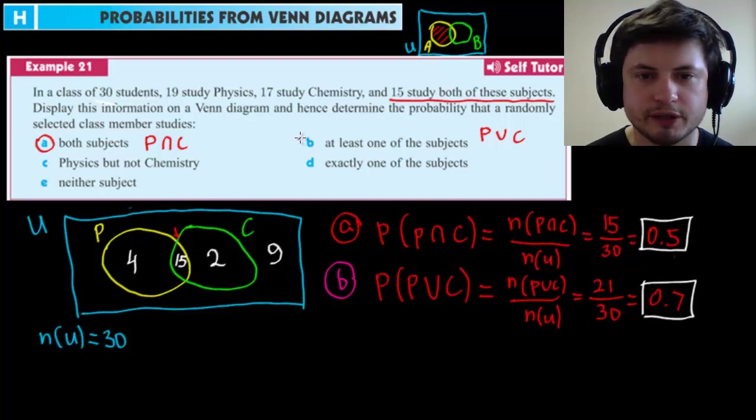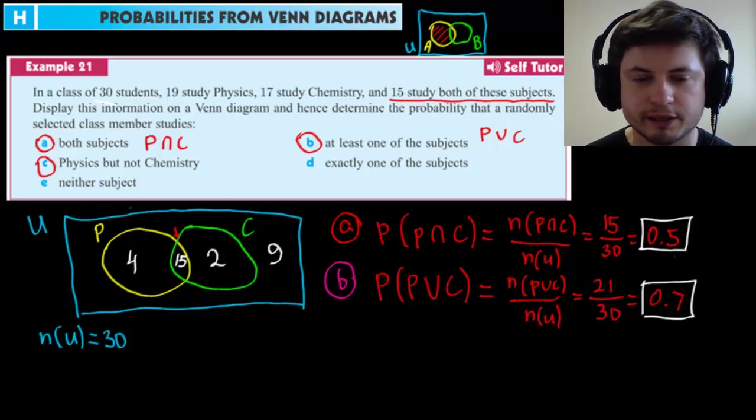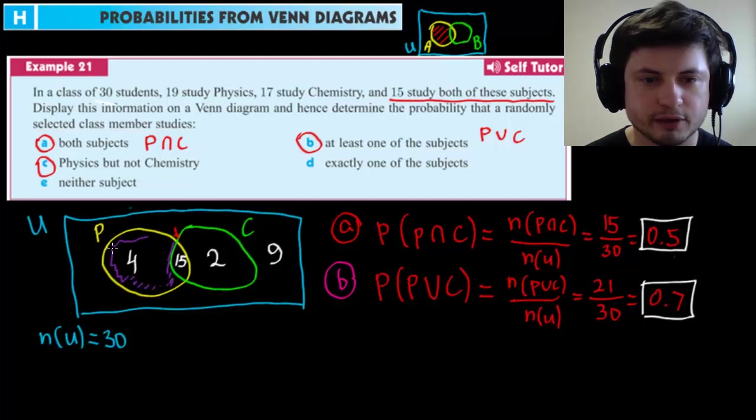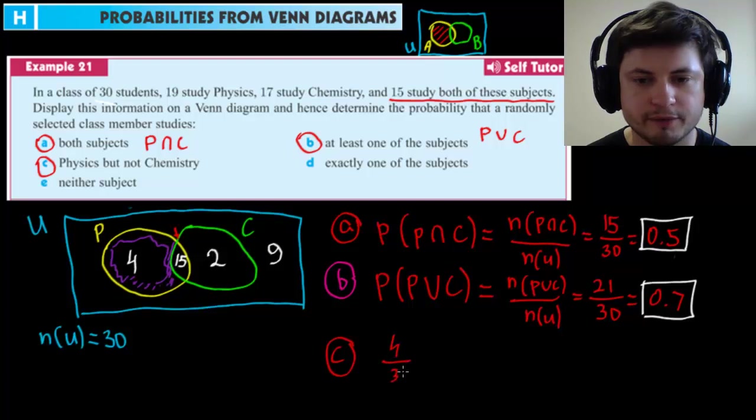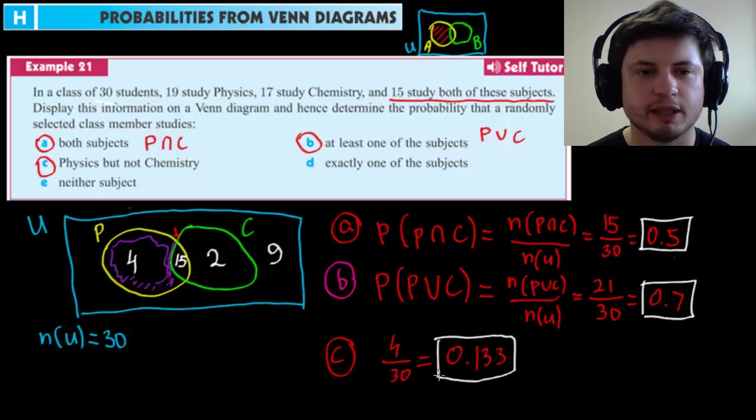Let's look at question C. Question C is relatively easy. So physics, but not chemistry. Physics, but not chemistry. If you look at the Venn diagram, essentially what we're looking at is not chemistry, so just physics. And that's relatively easy because there's only one number here, four. So for question C, four divided by 30, which will give us approximately, I believe it's approximately 0.133 or 13%. And that's the answer to question C.